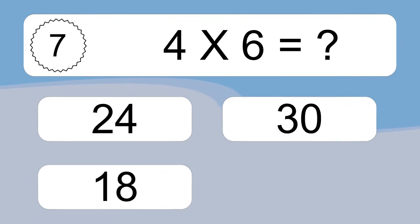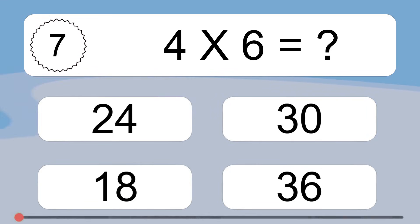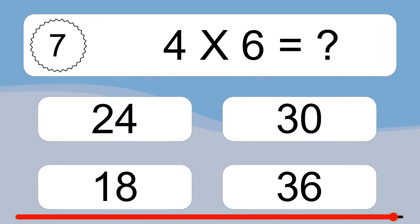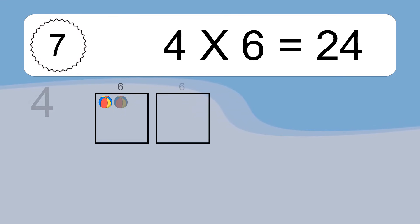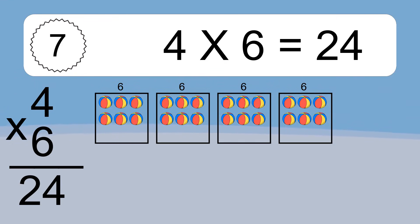4 times 6 equals what? We have 4 boxes, and each box has 6 colorful balls inside. If you count all the balls in all the boxes together, you will have 4 times 6 balls. This equals 24 balls.